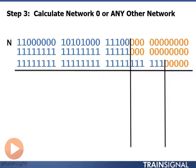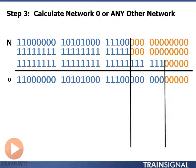Then I calculate network 0 and any other network. So network 0, I'm converting 0 to binary, I'm putting it into my borrowed bits section, and then putting all 0s in my host portion to get my network address.